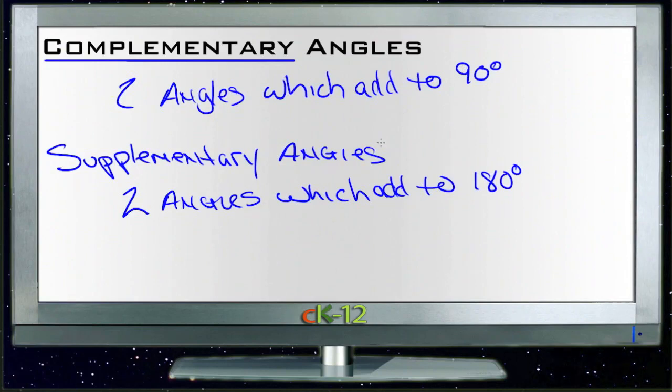It's really easy to get the two confused. What I remember to help keep track of those is that since they both have different first letters, C and S, since C comes before S in the alphabet, 90 comes before 180. Those go together.